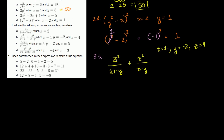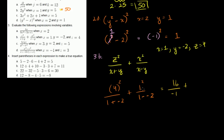Substituting: 4 squared over (1 plus negative 2) plus 1 squared over (1 minus negative 2). That gives us 16 over (1 minus 2) plus 1 over (1 plus 2), which is 16 over negative 1 plus 1 third. That simplifies to negative 16 plus 1 third.